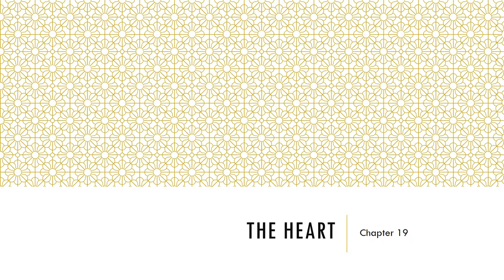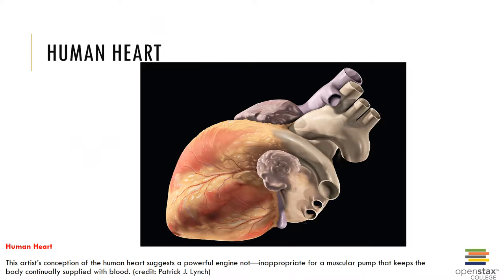In chapter 19 we will examine the cardiovascular system, focusing on the heart. The heart is found immediately behind the sternum, situated between the lungs within the mediastinum, which also holds the great vessels, the thymus, esophagus, and trachea. The heart is about the size of a clenched fist, shaped like an inverted cone with the pointed apex oriented down and the broad flat base oriented up.